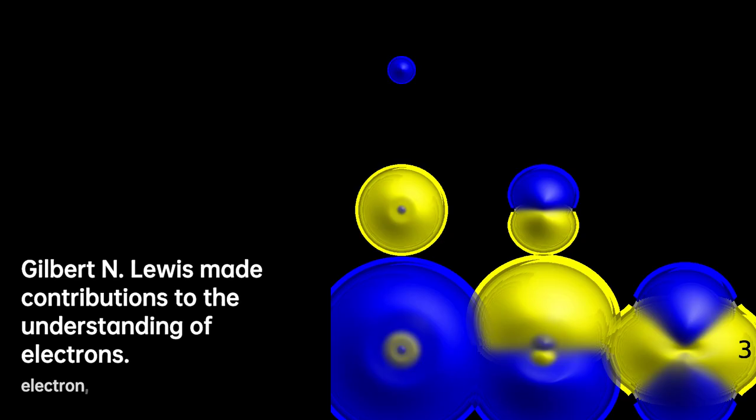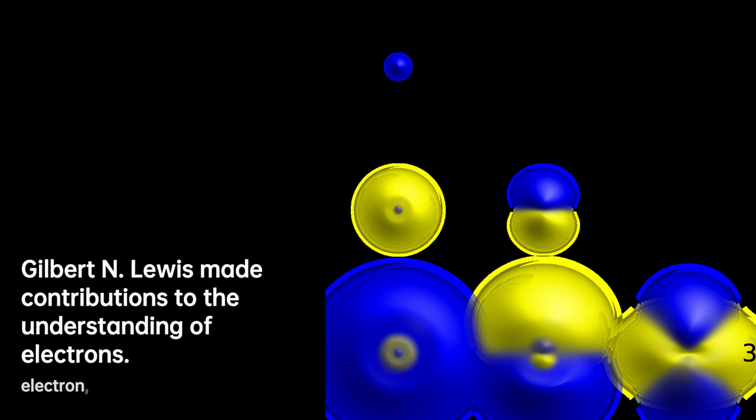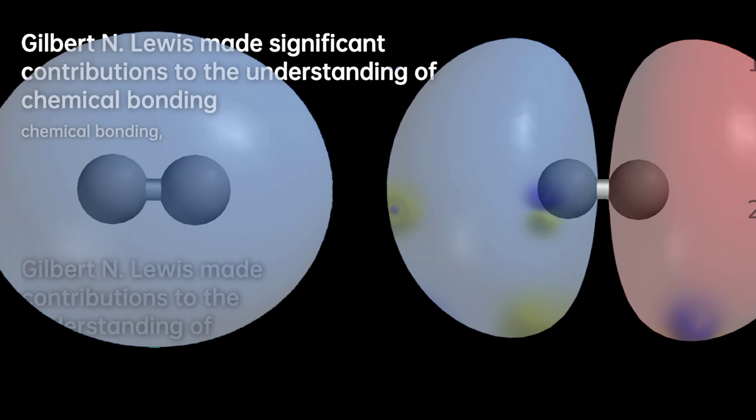In the realm of scientific pioneers, one name stands out: Gilbert Newton Lewis, an American physical chemist whose contributions to the field are immeasurable. Lewis is renowned for his groundbreaking discovery of the covalent bond and his concept of electron pairs.